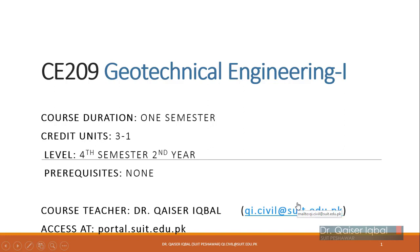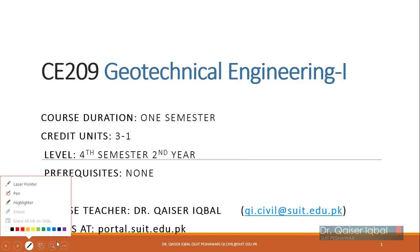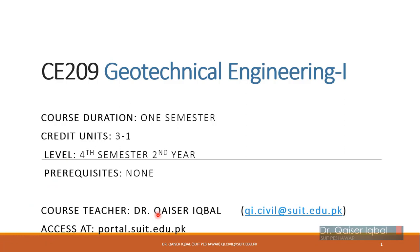Assalamu alaikum dear students, today we are going to start Geotechnical Engineering 1. The course code is CE 209, it's a level 4 course of the second year, semester one. The semester duration is one semester and the credit hours are three for the theory and one for the lab. The course instructor is Dr. Kashir Iqbal — you can check my email which is available right here, and you can get back to me on email if you have any queries, or on our WhatsApp group as well.